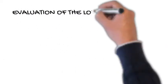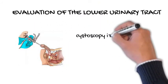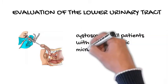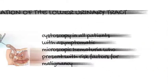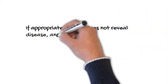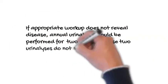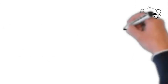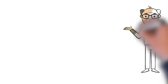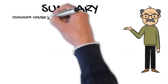Evaluation of the lower urinary tract: Cystoscopy is recommended in all patients with asymptomatic microscopic hematuria who present with risk factors for malignancy, regardless of age. If appropriate workup does not reveal nephrologic or urologic disease, then annual urinalysis should be performed for at least two years after initial referral. If these two urinalyses do not show persistent hematuria, the risk of future malignancy is less than 1%, and the patient may be released from care.